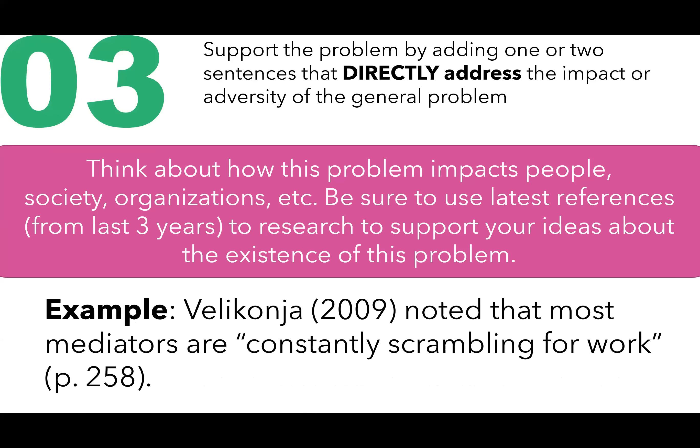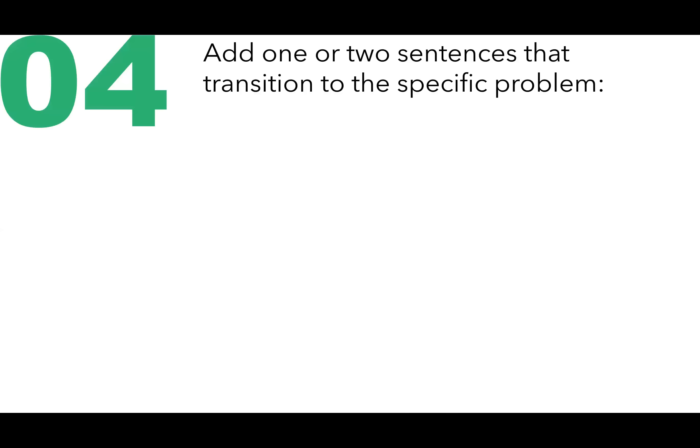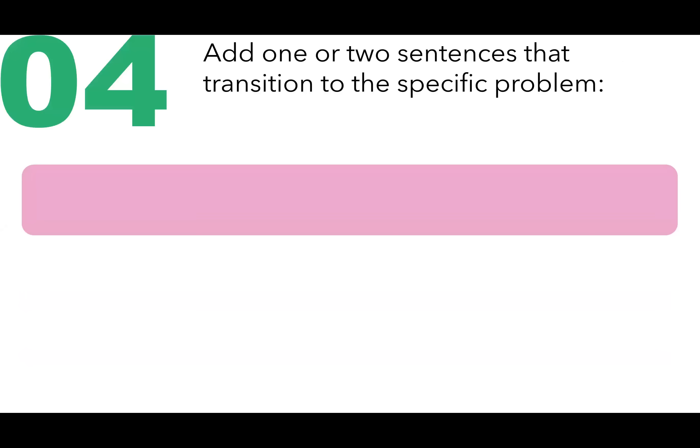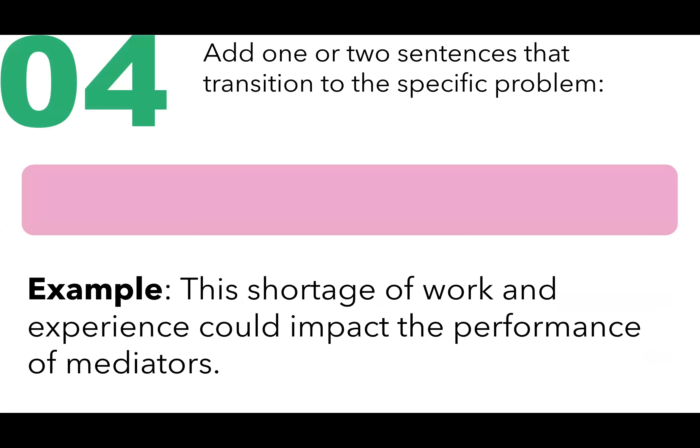For example, the authors noted that most mediators are constantly scrambling for work. And whenever you quote, you need to provide the page number for the exact, precise citation. Number four: add one or two sentences that transition to the specific problem — for instance, this shortage of work and experience could impact the performance of mediators.